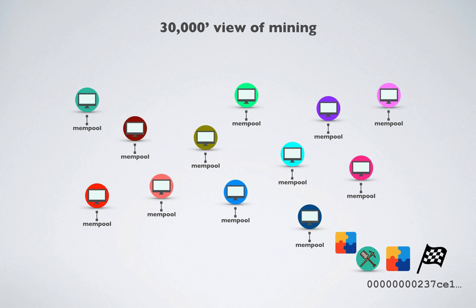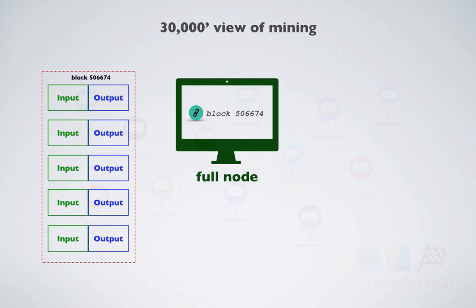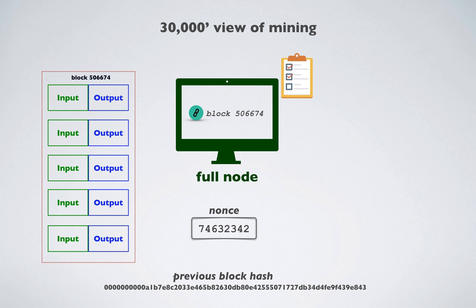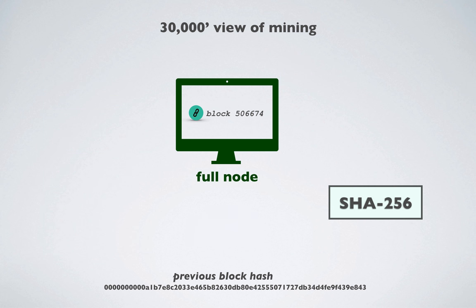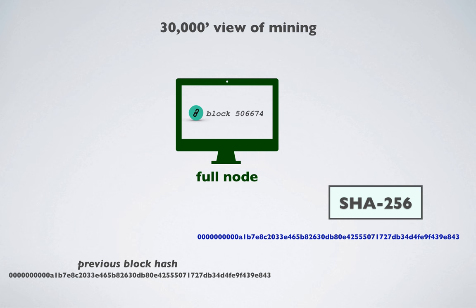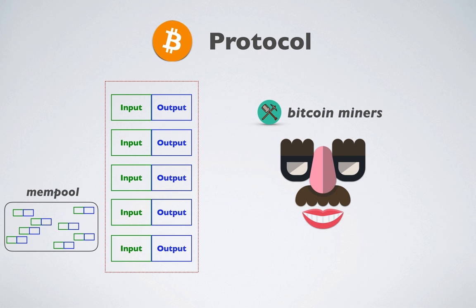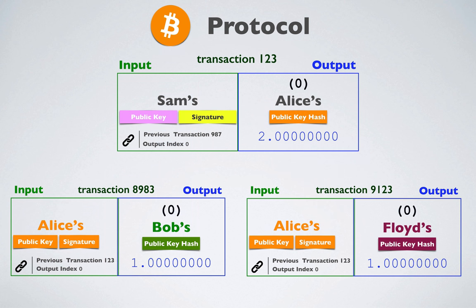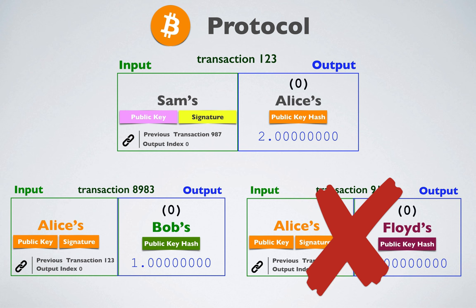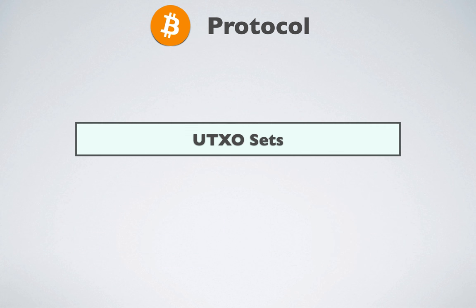The winning miner immediately broadcasts to the network that they've won, and each full node must now validate the block. Unlike finding the target number, validating the block is much faster. The full node will validate each transaction again, assemble the block, the nonce, the previous block's hash, and hash all of it to determine if it comes up with the target. If it does, the block is validated and the transactions will be considered to have one confirmation. The protocol uses keys and signatures to prevent tampering with a given transaction, and mining provides a way for untrusted sources to order transactions into blocks — which provides part of the mechanism for preventing double spending.